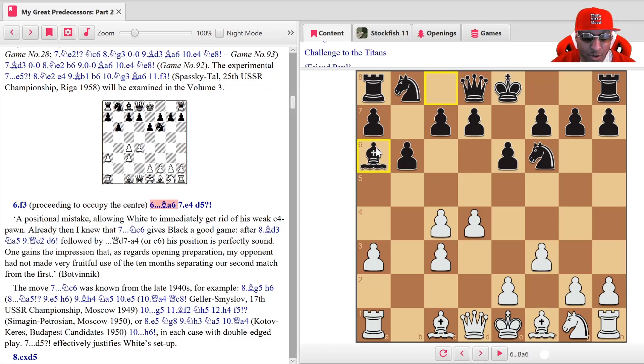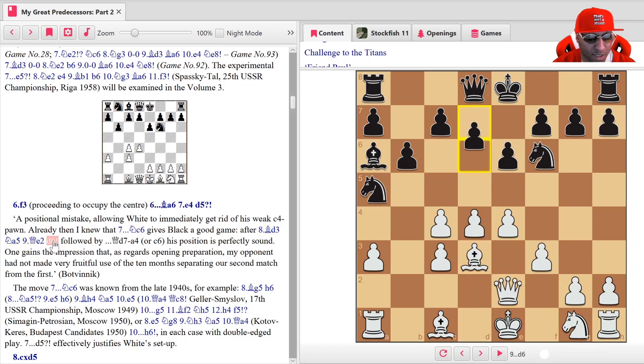After f3, which is the most common move here, proceeding to occupy the center, bishop a6 hits the c4 pawn. After e4, you usually would go knight to c6 here, but what Tal did was d5. This says that this is a positional mistake allowing White to immediately get rid of the c4 pawn. It says already knight c6 gives Black a good game with d6, queen d7, queen a4.